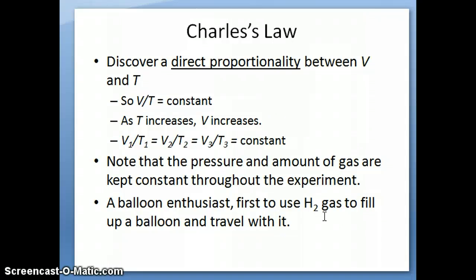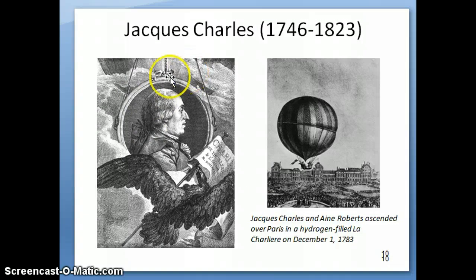Charles is a unique scientist because he was a balloon enthusiast. He really wanted to experiment with air travel. He was alive around the 18th century, so he was interested to try to figure out if there's a way to use a balloon to travel. He was the first person to use hydrogen gas, fill up a balloon, and actually travel with it. Here's Charles illustrated here, and here's his travel in a balloon with a friend.